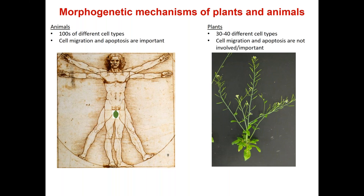In plants it's a simpler situation — there are really about 30 or 40 different cell types depending on which plant you're looking at, and of course there's really no cell migration. There is programmed cell death, but it is typically not involved in morphogenesis. An example is cells that make up the water-conducting tissues or the xylem: those cells at maturity undergo programmed cell death, and their empty cell wall tubes then serve as water-conducting tubes, but that doesn't affect the shape of the plant.